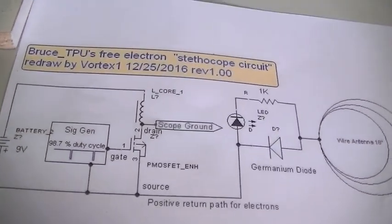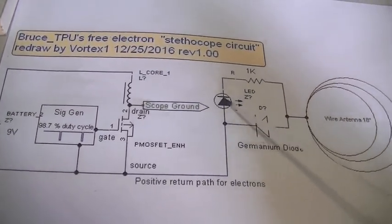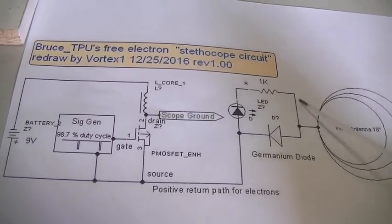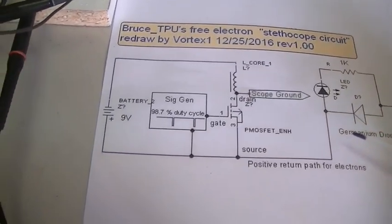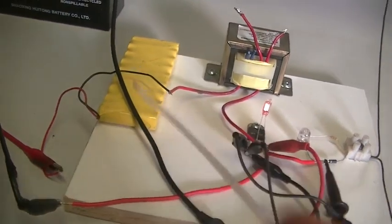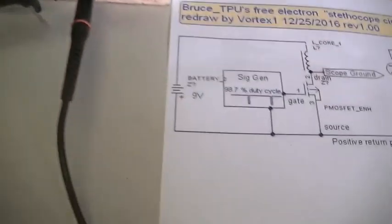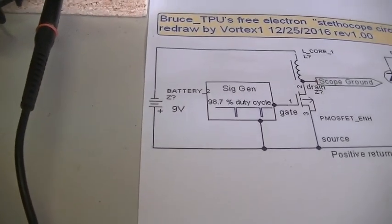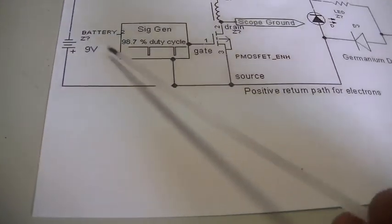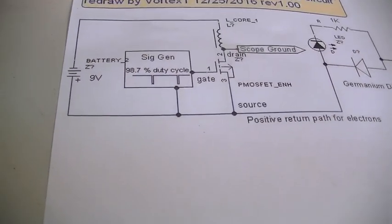So no cigar for me on this one, cannot get the LED to light using this circuit. Our battery is about 9.8 volts there instead of 9 volts, but close enough I would think. Our duty cycle, close enough.